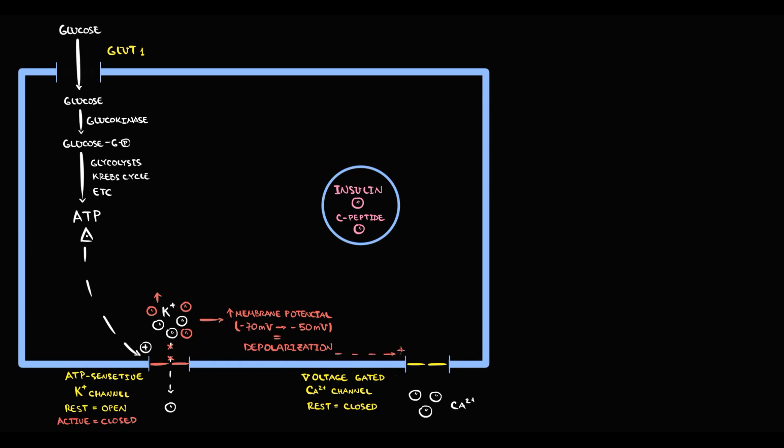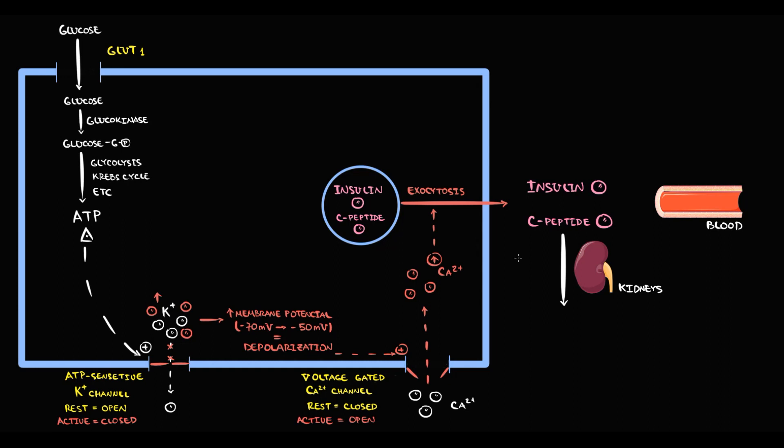Depolarization triggers activation of voltage-gated calcium channels. If calcium channels open, calcium by concentration gradient begins to enter into the cell, and increasing intracellular calcium triggers exocytosis of vesicles with release of insulin and C-peptide into the blood. The fate of C-peptide is rather prosaic. C-peptide comes to the kidneys, and kidneys excrete C-peptide from the organism into the urine. Insulin in the blood stimulates tissues to consume more glucose.